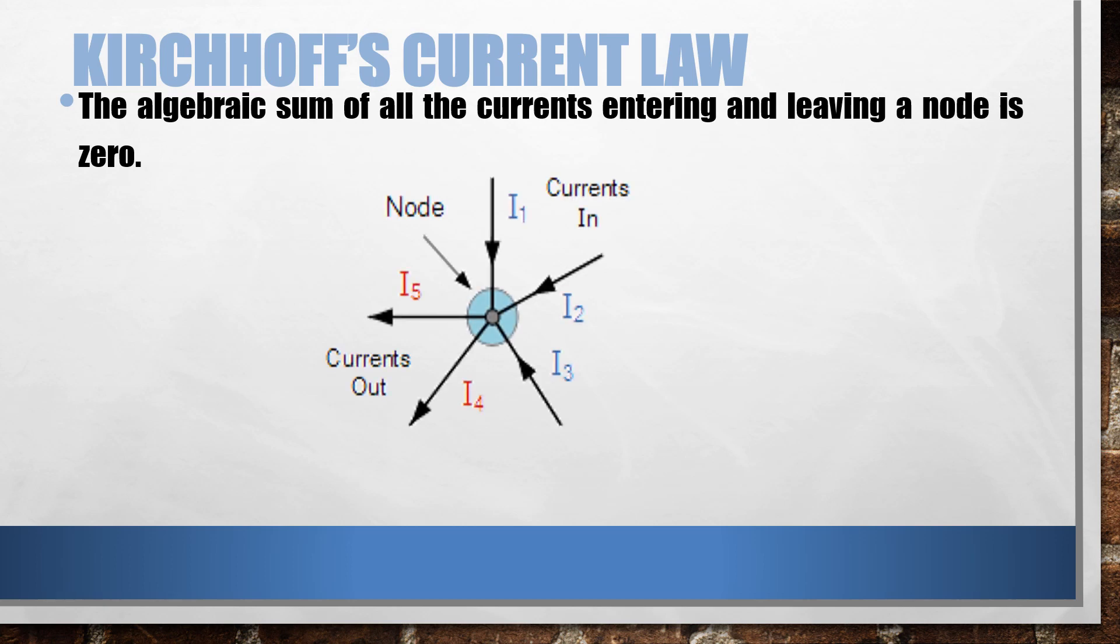Now look at this figure. As you can see here, three currents are entering this node and two currents are leaving. So currents entering the node equal the currents leaving the node. It means the algebraic sum of all the currents entering and leaving this node must be equal to zero.